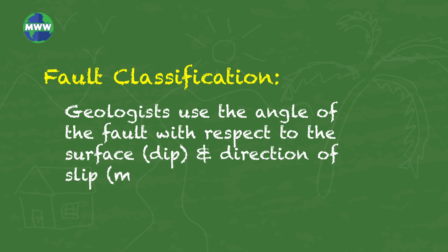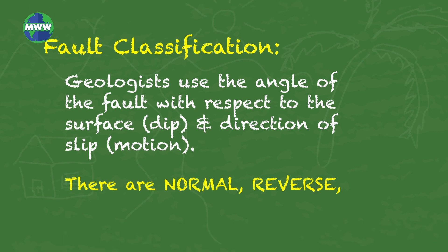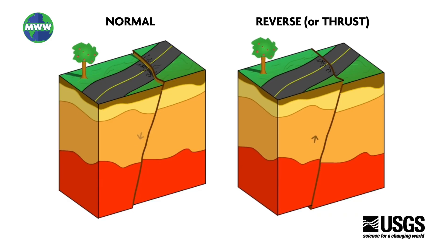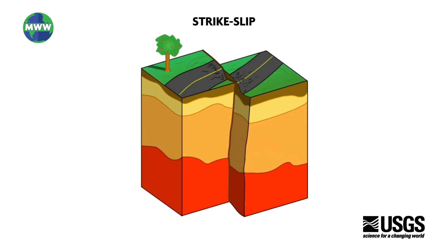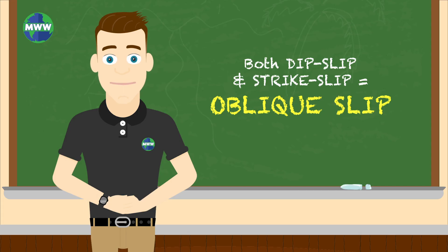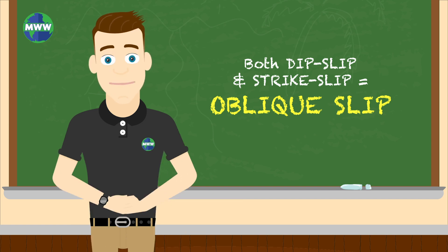Geologists use the angle of the fault with respect to the surface, or dip, and the direction of the slip, or motion, to classify faults. There are normal, reverse, and strike-slip faults. Normal and reverse faults move vertically, and are referred to as dip-slip faults. Strike-slip faults move horizontally. When faults have both dip-slip and strike-slip motion, they're known as oblique-slip.